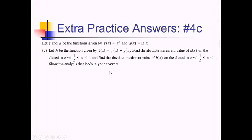For this last part of the problem, this is a bit of a curveball because we're defining another function H of x as F of x minus G of x. They want the absolute min and max values of H of x on the interval from one-half to 1. We know we can find them because we have a closed interval and both e to the x and ln of x are continuous on this interval. So we're going to use the candidates test. We'll be testing one-half and 1 in the H function, plus any critical values between them.